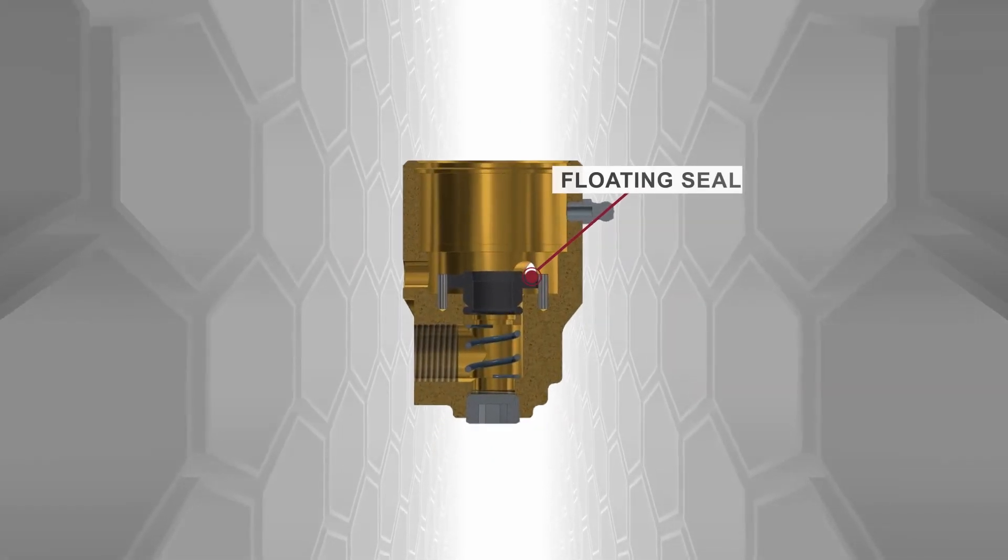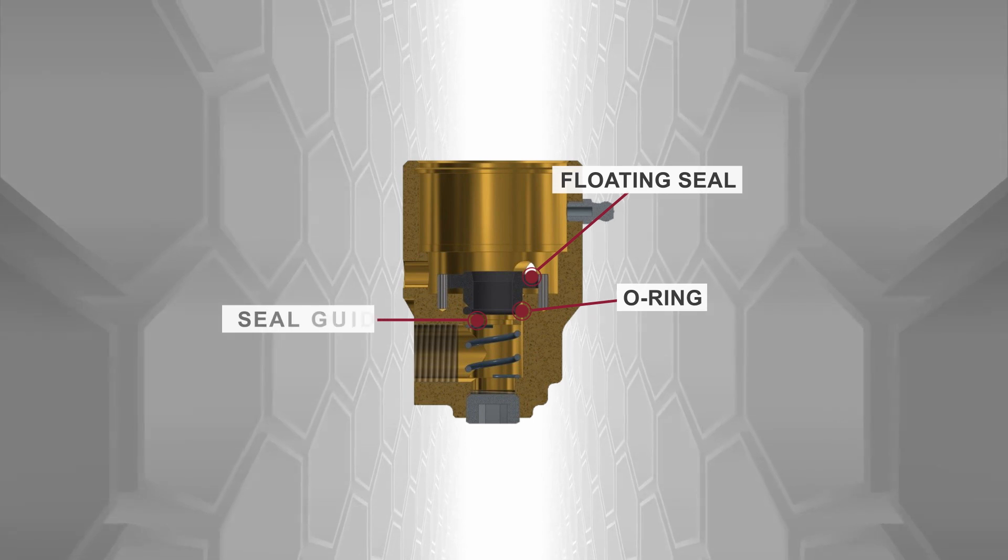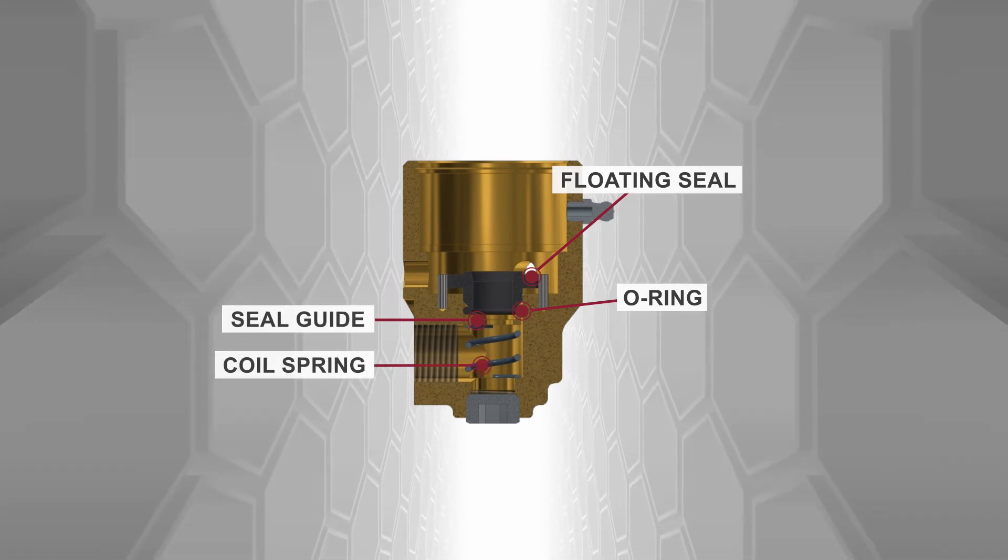Now, the floating seal, O-Ring, seal guide, and coil spring can all be removed from the union.